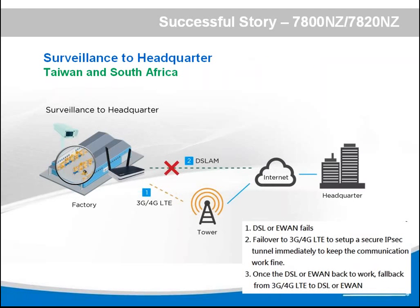Another application is factory or farm security monitoring. The headquarters wants to watch the status of a factory or farm using our device — DSL as the main interface and mobile as the second — to make sure the connection is always on.